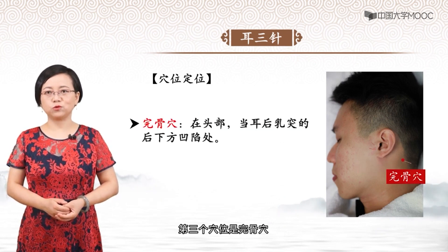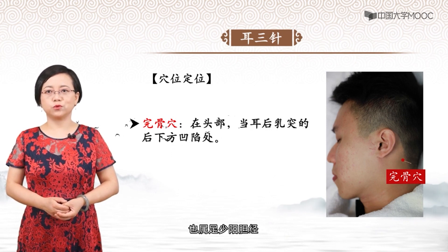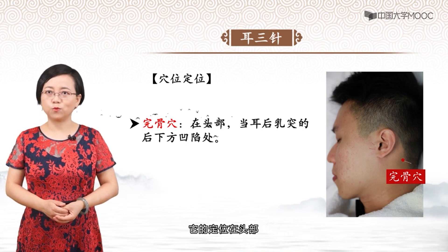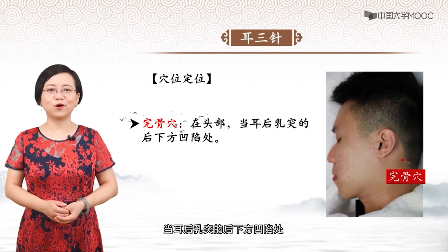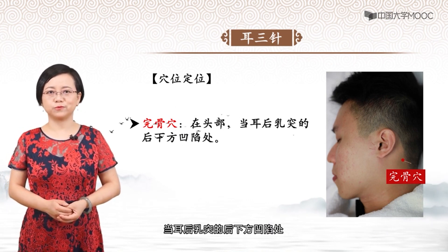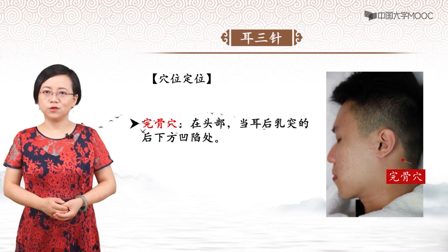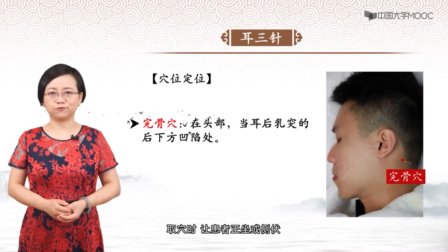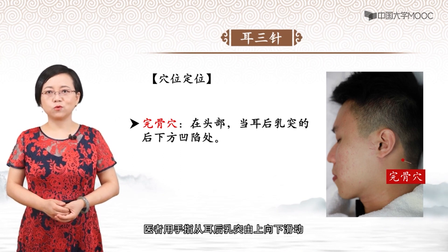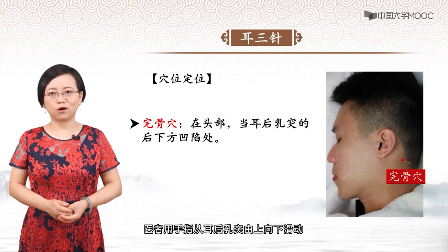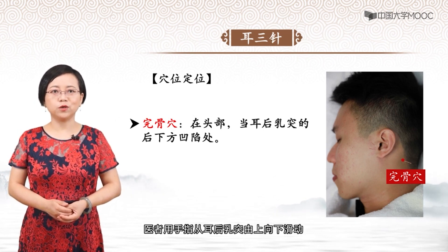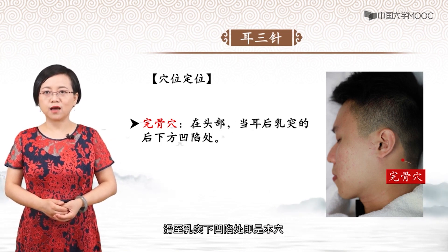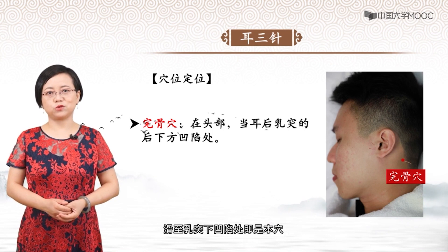第三个穴位是完骨穴，属足少阳胆经。它的定位在头部，耳后乳突的后下方凹陷处。取穴时让患者正坐或侧伏，医者用手指从耳后乳突由上向下滑动，滑至乳突下凹陷处即是本穴。